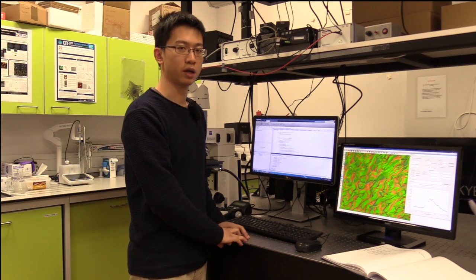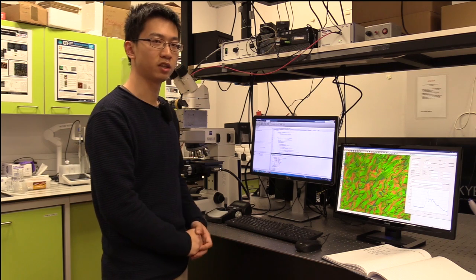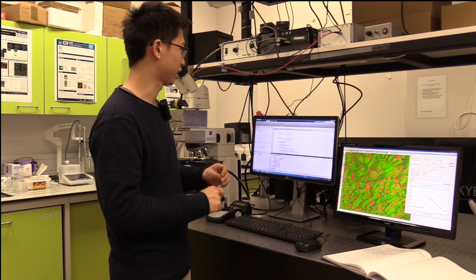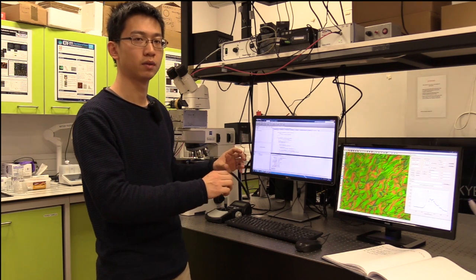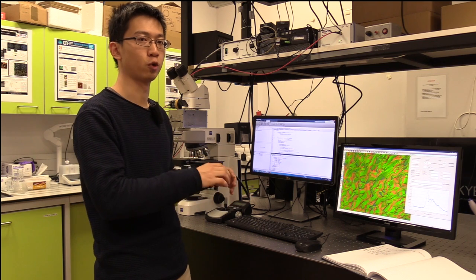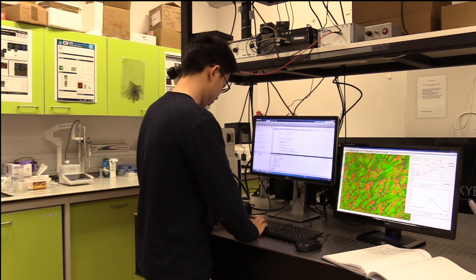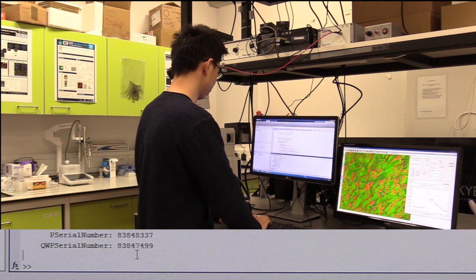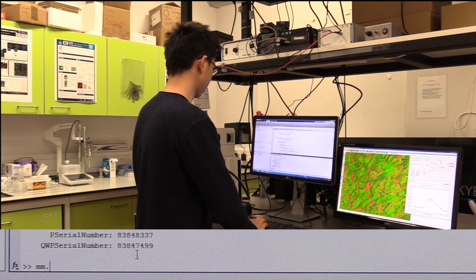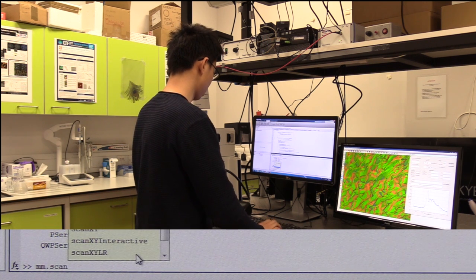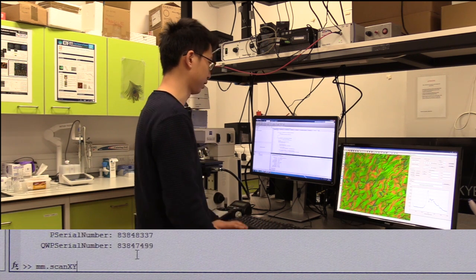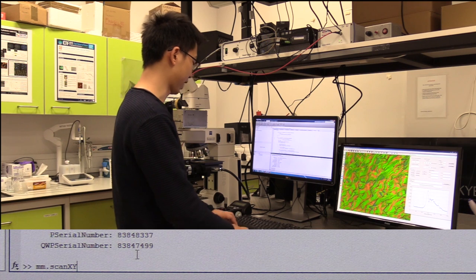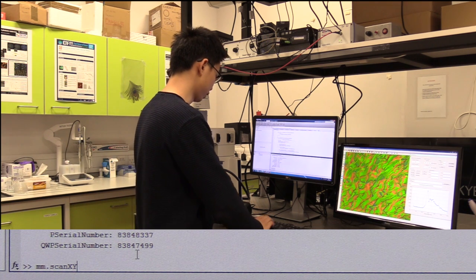A very common method you will use is scan XY. As the name suggests, it will let the stage scan in XY direction and take measurements for each point scanned. To do that, I type in mm dot scan XY, and then I type in the range and separation for points. For example, I want to scan from 0 to 1000 with 100 micron in between each point.